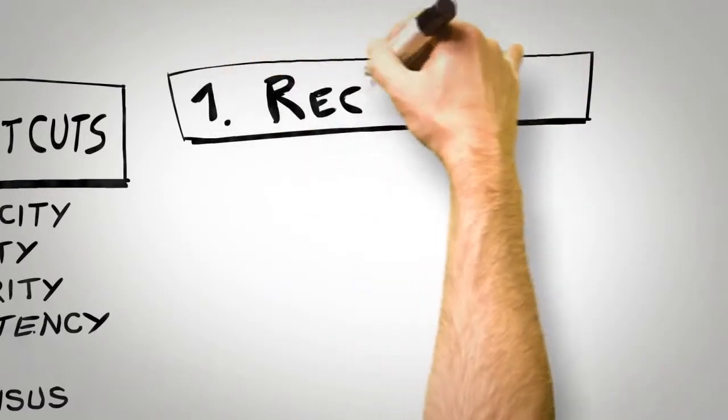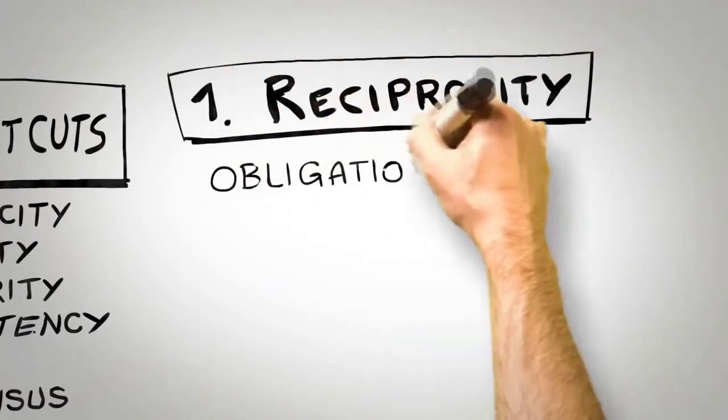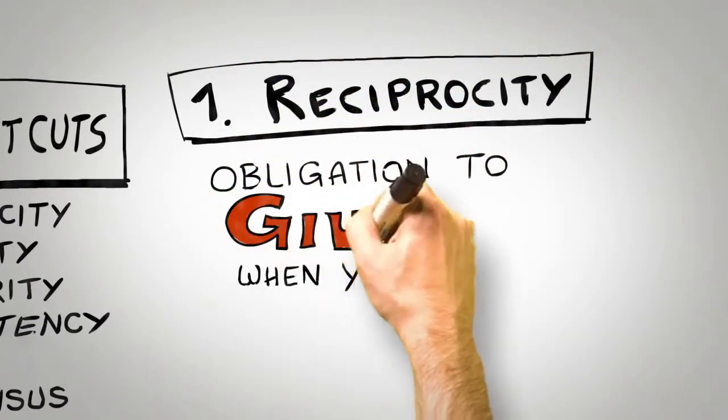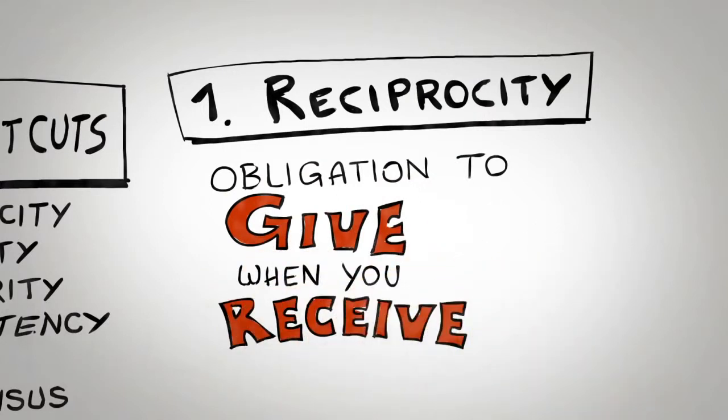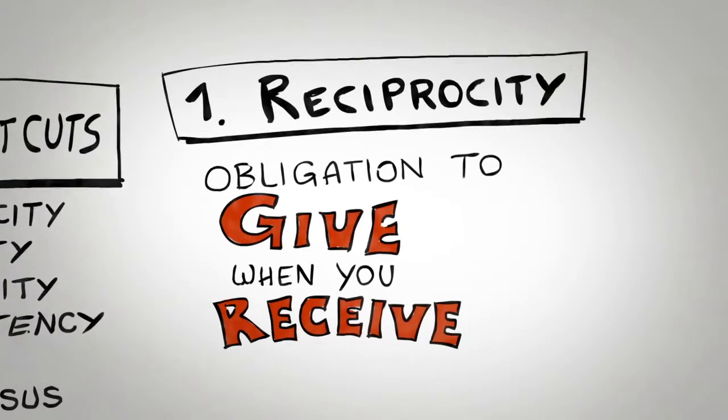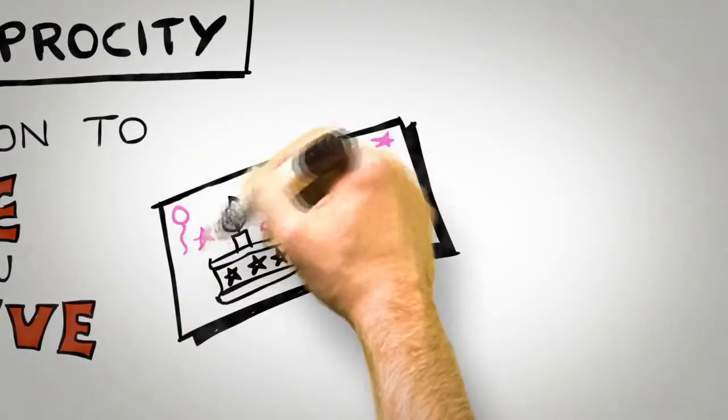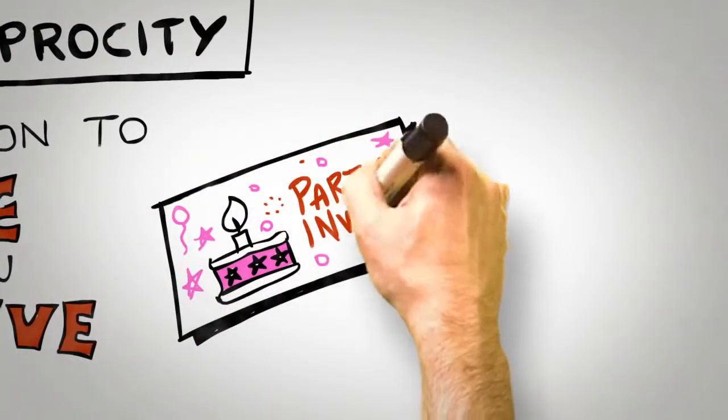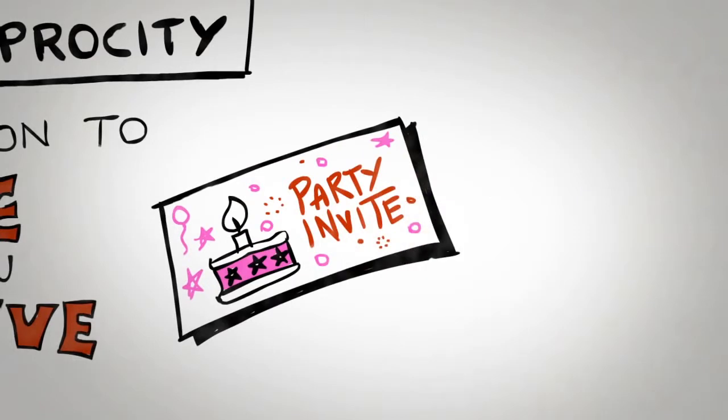The first universal principle of influence is reciprocity. Simply put, people are obliged to give back to others the form of behavior, gift, or service that they have received first. If a friend invites you to their party, there's an obligation for you to invite them to a future party. If a colleague does you a favor, then you owe that colleague a favor.